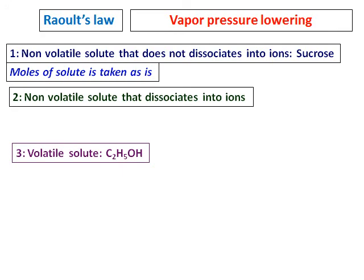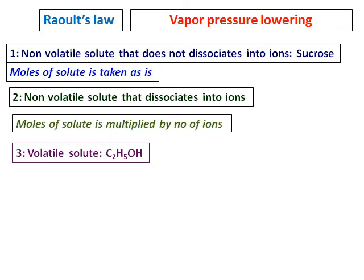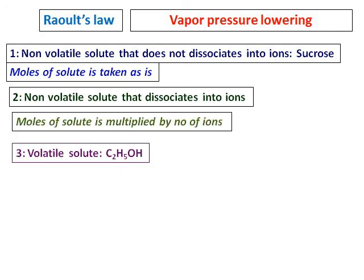In case of a non-volatile solute that dissociates into ions, we have to multiply by the number of ions it forms. For example, sodium chloride — multiply by 2. Calcium chloride — multiply by 3, because it forms 3 ions: 1 calcium and 2 chloride ions.